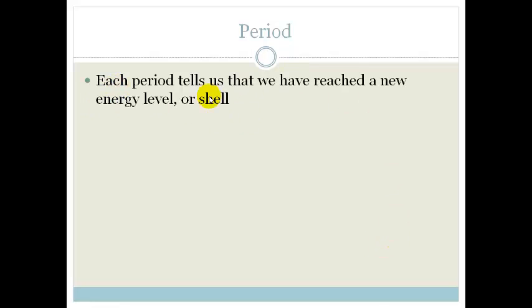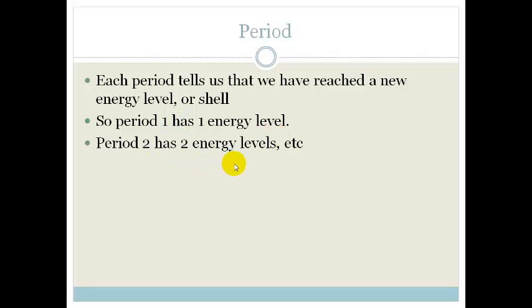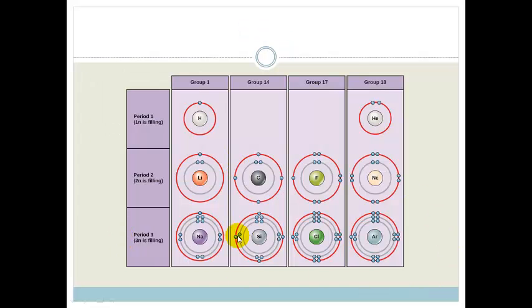The periods are telling us about the energy levels. Each period tells us we've reached a new energy level or shell. So period 1 has got 1 energy level, period 2 has got 2 energy levels, etc. So if we look at this drawing again you will see that we've got the period hydrogen and helium are in period 1 or row 1 and therefore they've got only 1 energy level, 1 shell of electrons.